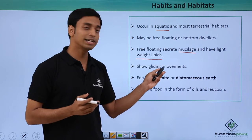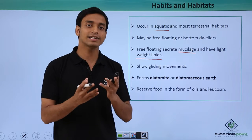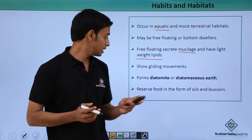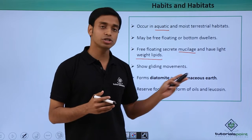They show gliding movements - very slow movements, basically a type of gliding locomotion. They form diatomite, also known as diatomaceous earth.